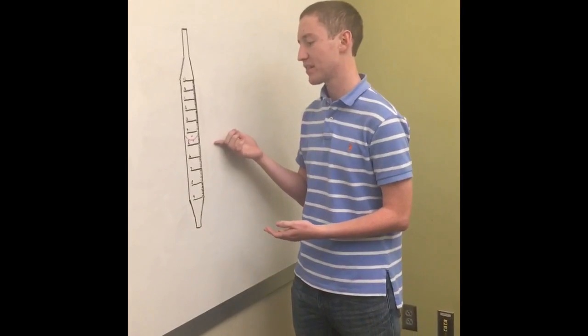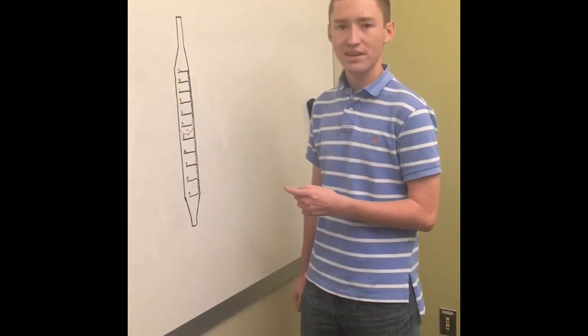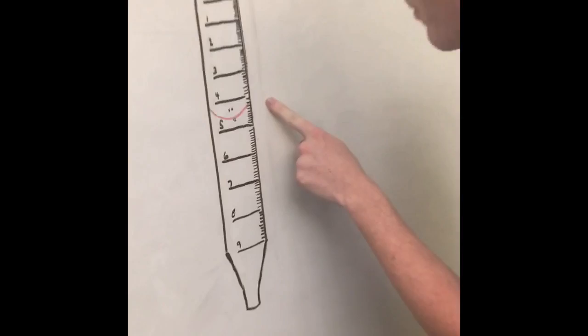This is an example of a meniscus in a pipette. The value of the meniscus reads 5.54 milliliters.